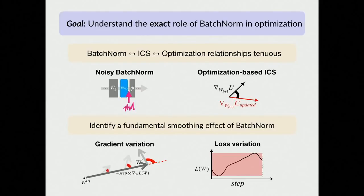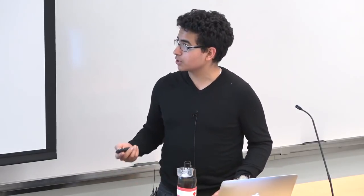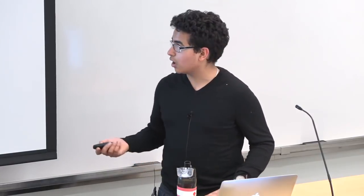Just to recap what we've done: our goal is to understand the exact role of batch norm in optimization. Our first step was revisiting the classical hypothesis — internal covariate shift — the idea that direct control over mean and variance prevents distributional instability that hinders optimization. We found that both in the distributional instability sense and the optimization instability sense, we couldn't pin down a link between batch norm and internal covariate shift. Rather than looking at distributional properties, we looked at the optimization landscape, and found that batch norm has a simple smoothing effect on the loss landscape. We also showed that this is not due to mere rescaling of the loss — your optimal solution remains in the same place.